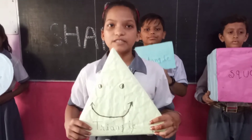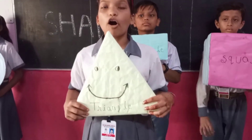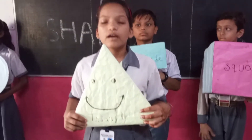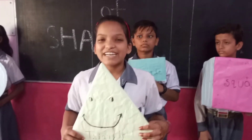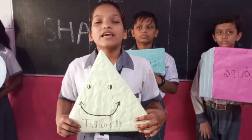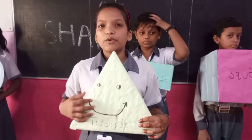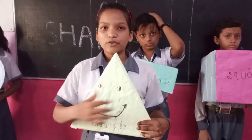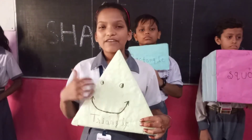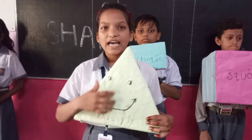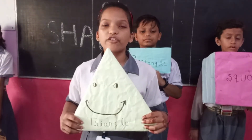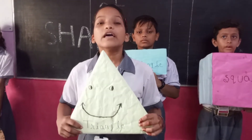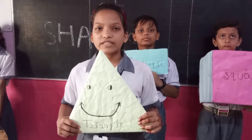I am a triangle. A triangle is made up of only straight lines. I have three sides. I have three corners. For example: hanger,